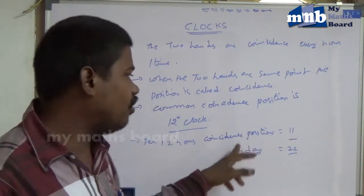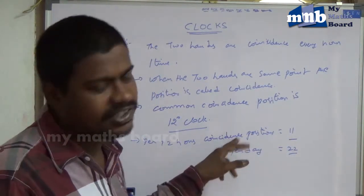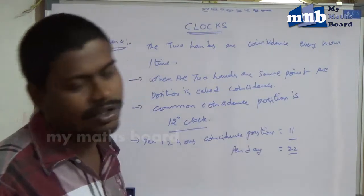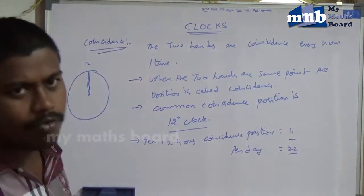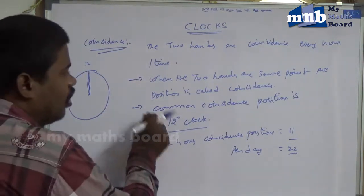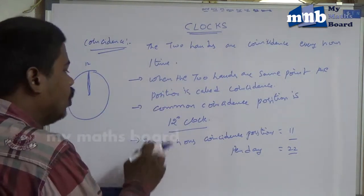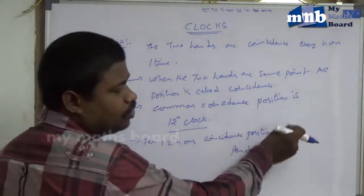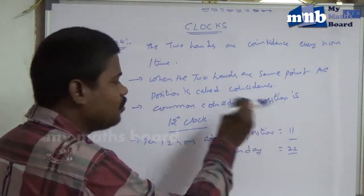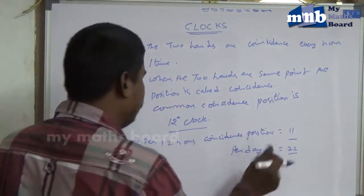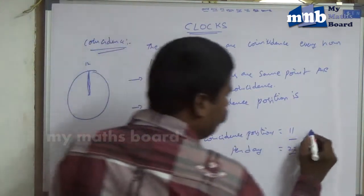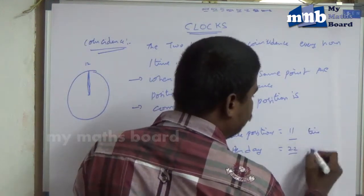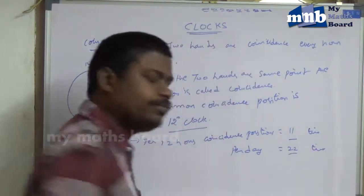Per 12 hours, we subtract one time — so 12 minus 1 equals 11. The common Coincidence Position is 12 o'clock, and that is not countable. Therefore, per 12 hours the Coincidence Position is 11 times, and per 24 hours the Coincidence Position is 22 times.